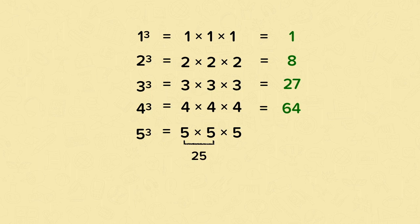And then we need to multiply this by 5. We can use partitioning to help us out. 25 can be partitioned into 20 and 5. 20 times 5 is 100. 5 times 5 is 25. If we add these two parts together, we get 125. This is 5 times 5 times 5. So 5 cubed is 125.